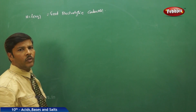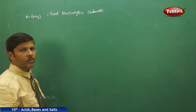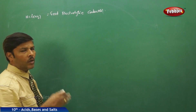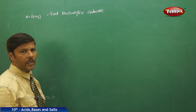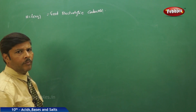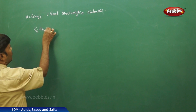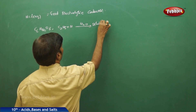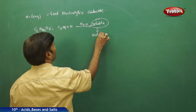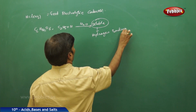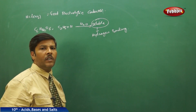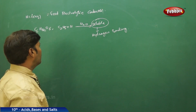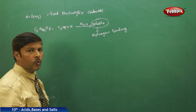Likewise, whether it is an acid or a base, a substance is a good electrolytic conductor only if it is able to furnish ions in aqueous solution. Glucose (C₆H₁₂O₆) and ethyl alcohol are soluble in water because of hydrogen bonding, but just because they have hydrogen bonding does not mean they give away H⁺ or OH⁻ ions. Since they cannot furnish any ions, both glucose and ethyl alcohol are bad or very poor electrolytic conductors.